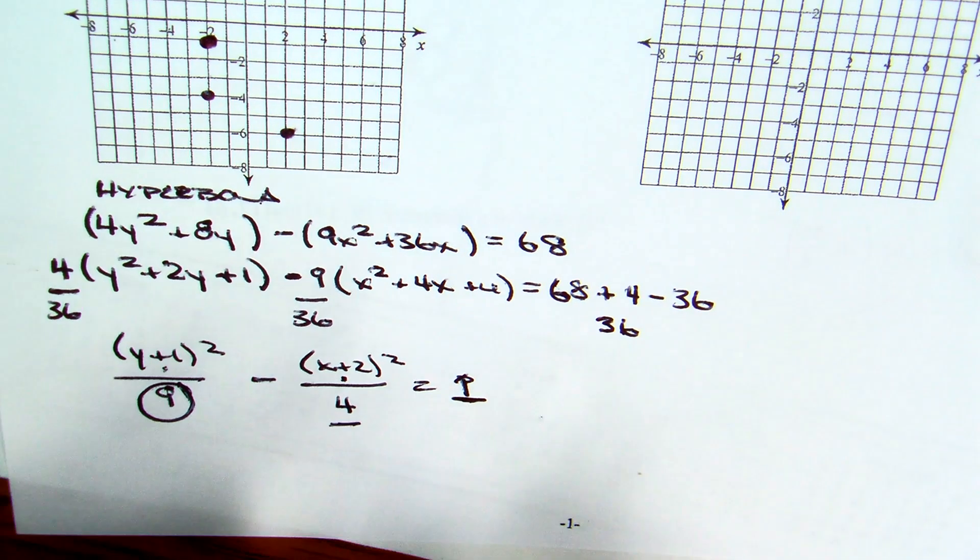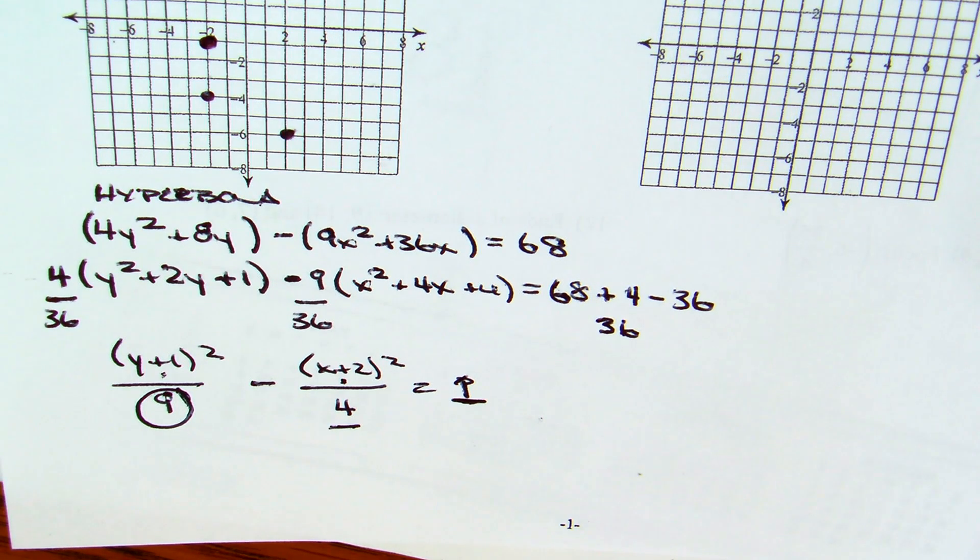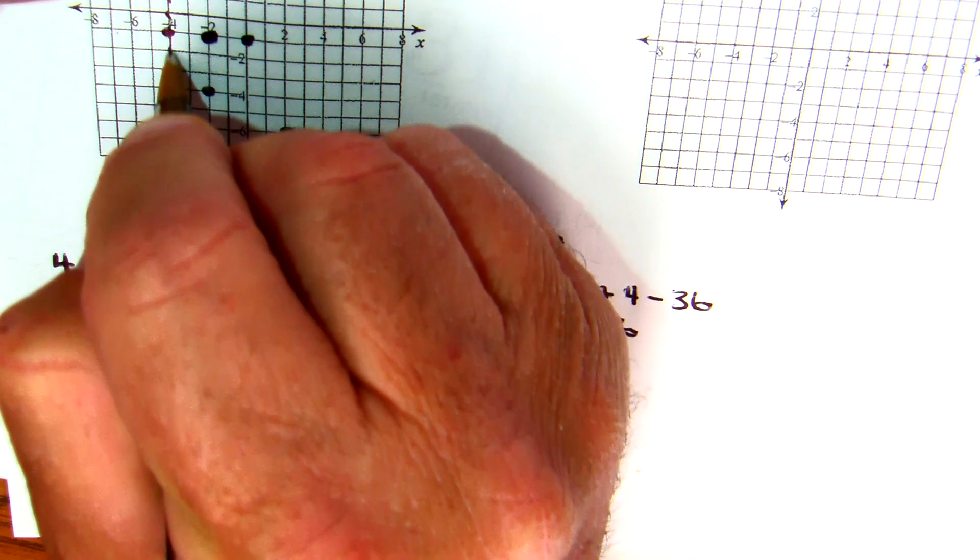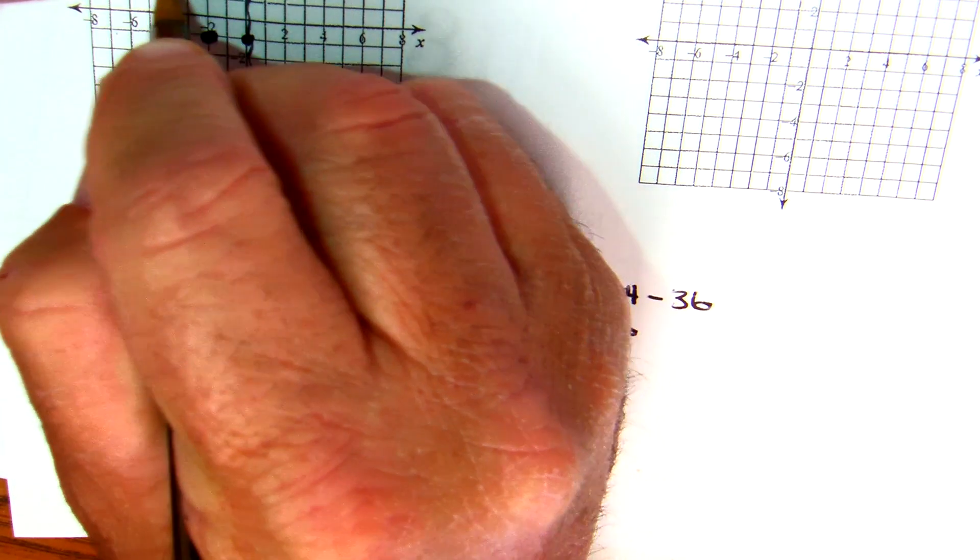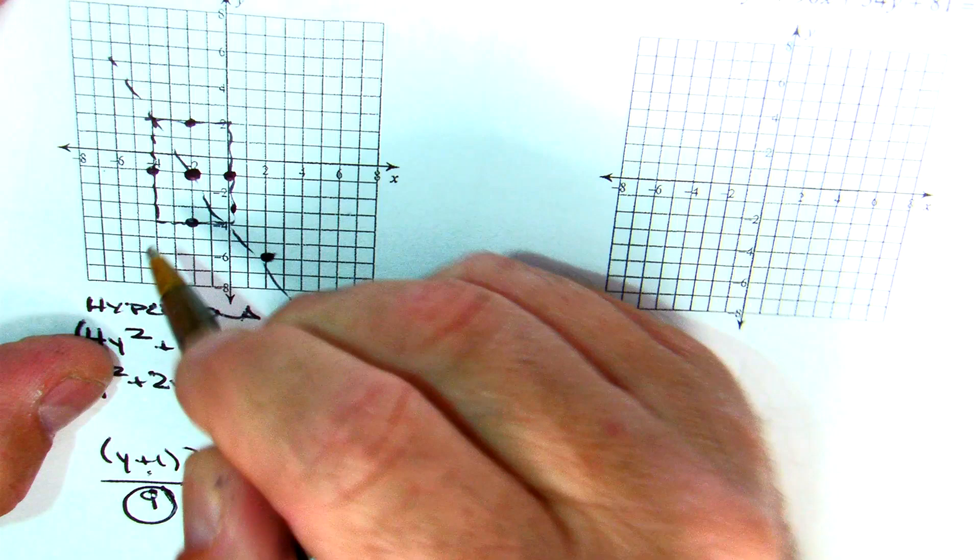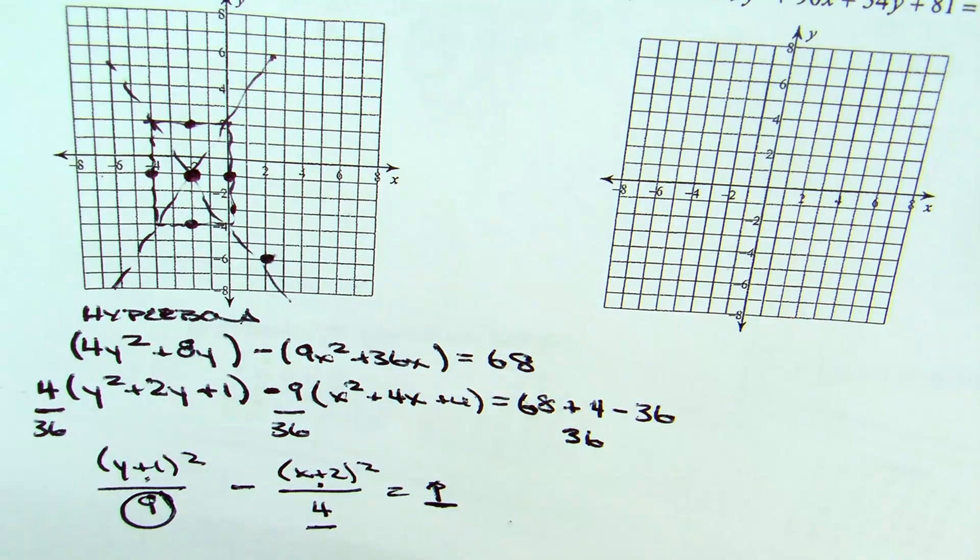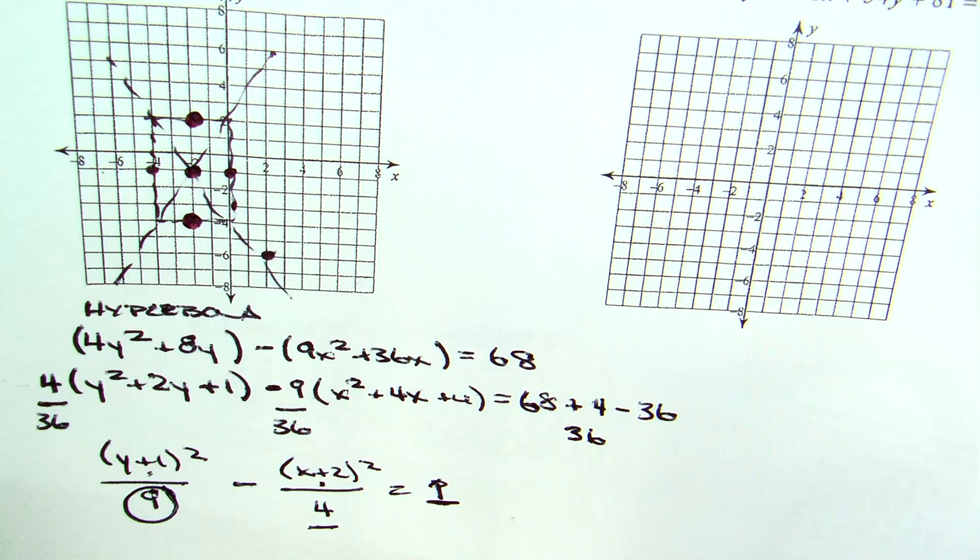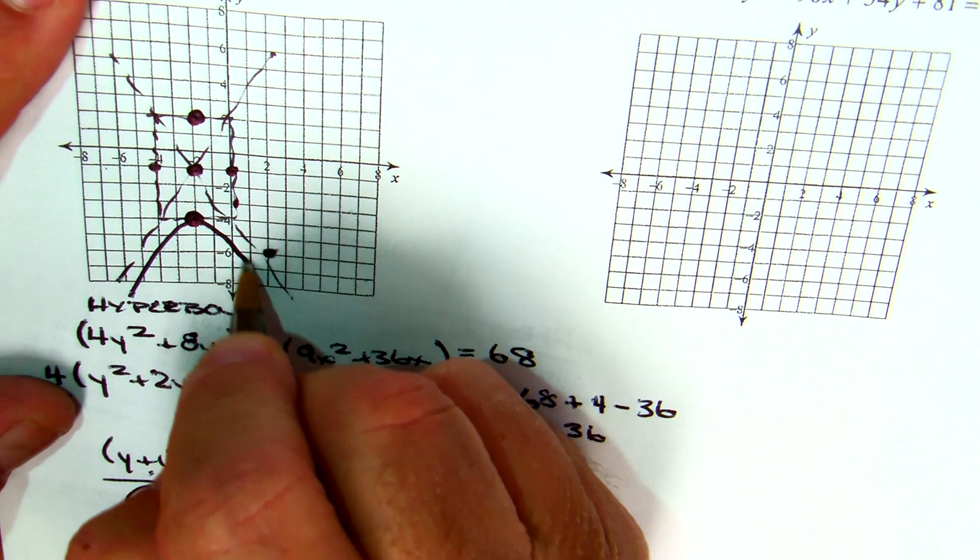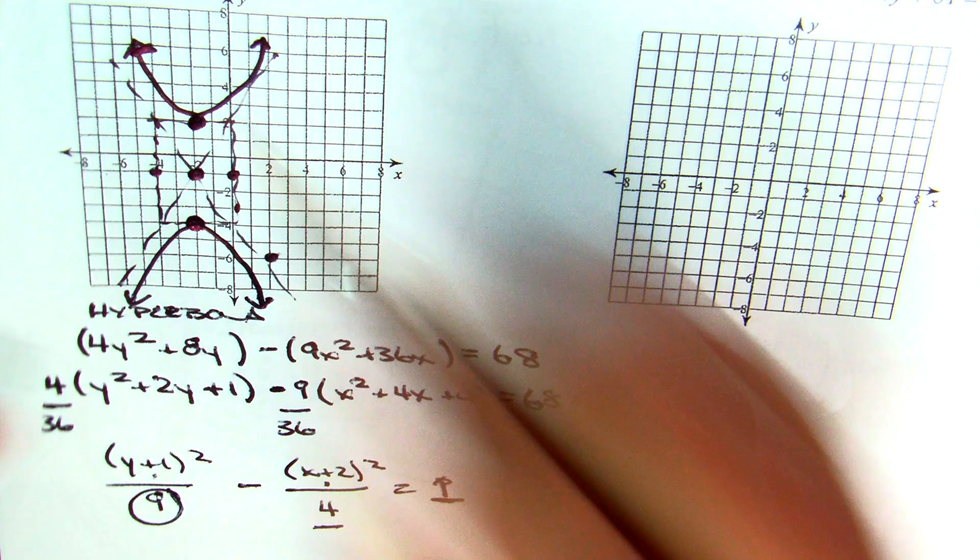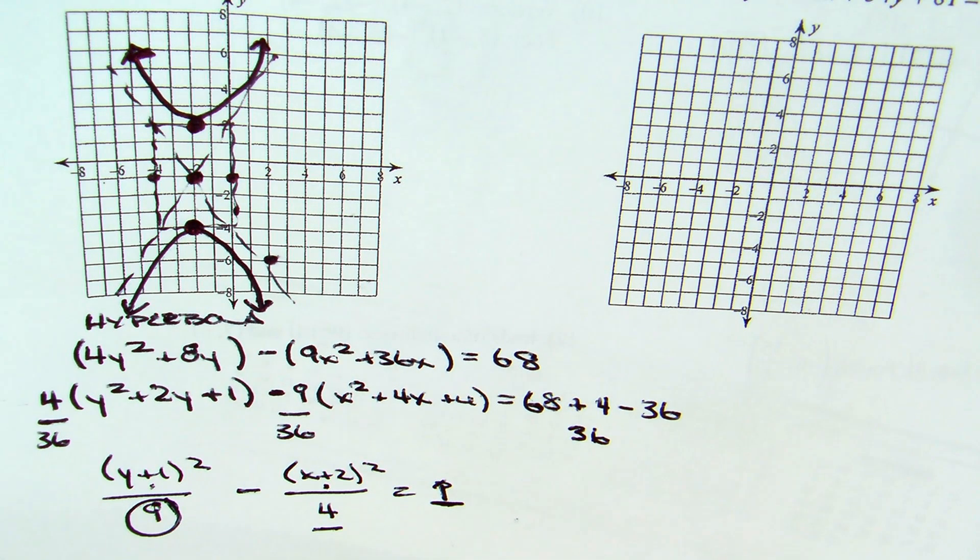My second fraction is 4. I have a denominator of 4. What's the square root of 4? 2. So, I'm going over 2 and I'm making my rectangle. I'm then creating my diagonals. Remember, those are my vertices. Which means my curves are going to be above and below. Well, I've done everything except the what?